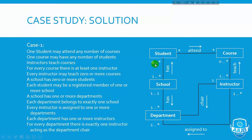A school has zero or more students. Each student may be a registered member of one or more schools. A school has one or more departments — one to many. Each department belongs to exactly one school — one to one. Every instructor is assigned to one or more departments — one or more. For every department there is exactly one instructor acting as the department chair — one to one.